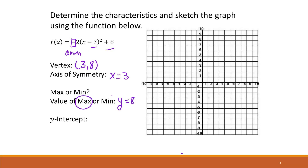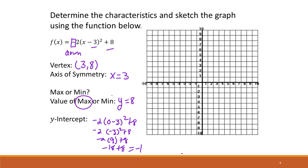For the y-intercept, substitute x = 0 and solve: negative 2 times (0 − 3)² + 8 = negative 2 times (−3)² + 8 = negative 2 times 9 + 8 = −18 + 8 = −10. So our y-intercept is the point (0, −10).